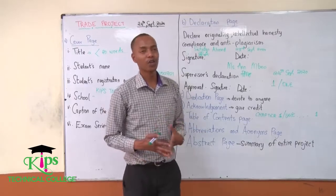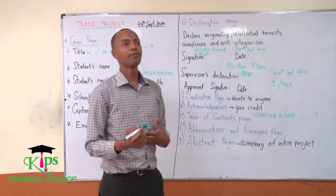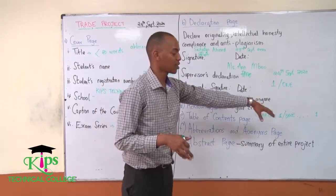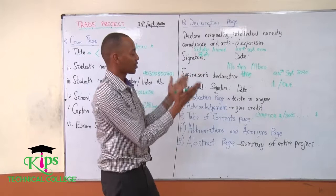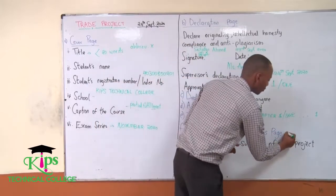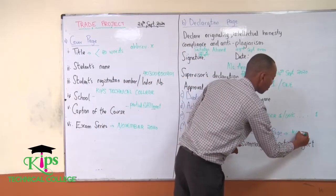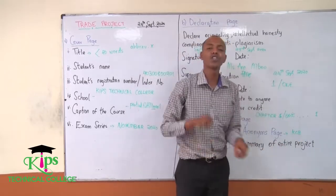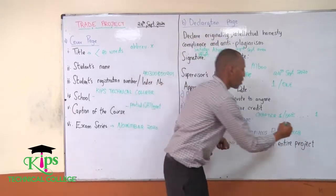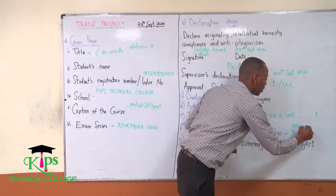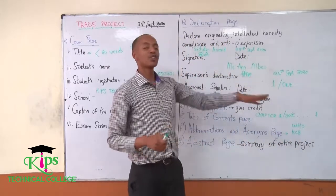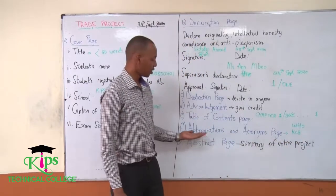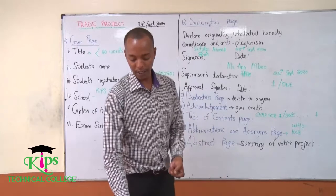Then, abbreviations and acronyms. This is the part where you have to include all abbreviations used in the project. You don't want a situation where you've used 'KCB' or 'WHO' inside the project but haven't explained what they mean in your abbreviations list. The abbreviations and acronyms section is usually one page.